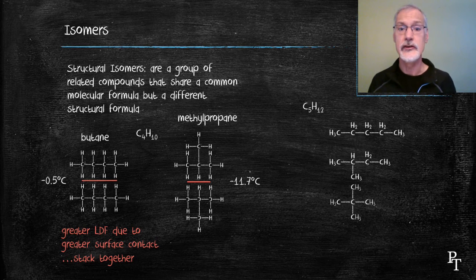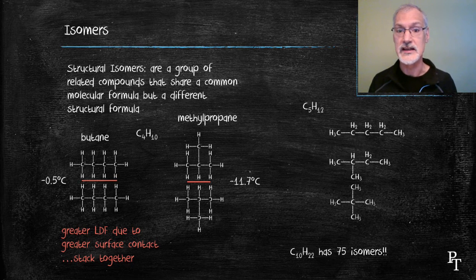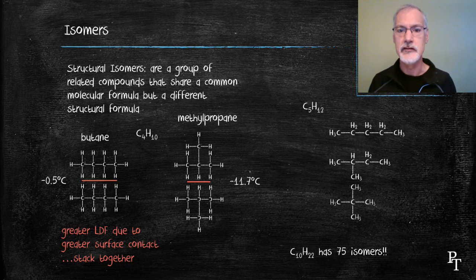The number of isomers tends to grow almost exponentially. So if you were to go up to something like decane, a 10-carbon chain, you would come up with as many as 75 isomers.